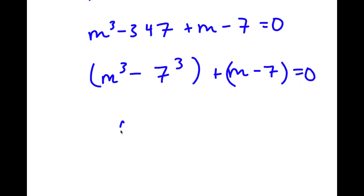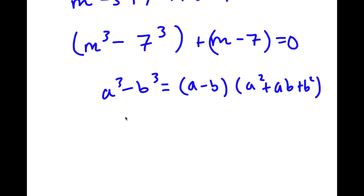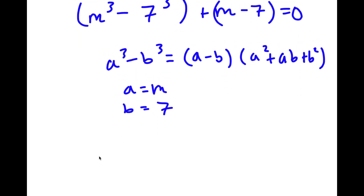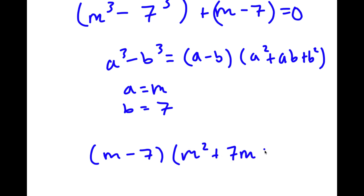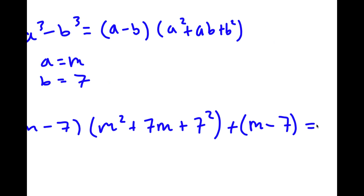Using the difference of cubes formula: a³ - b³ = (a - b)(a² + ab + b²), where a = m and b = 7, I get (m - 7)(m² + 7m + 49). Adding the remaining term, I have (m - 7)(m² + 7m + 49) + (m - 7) = 0.